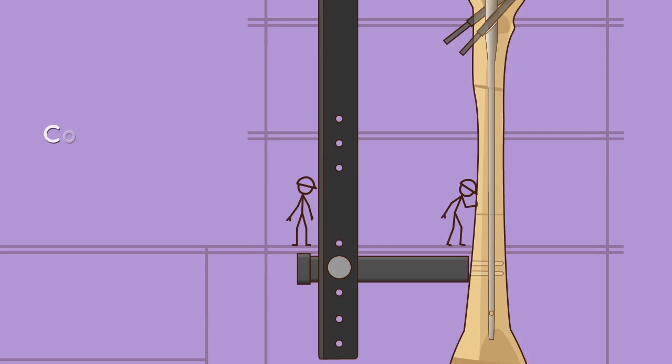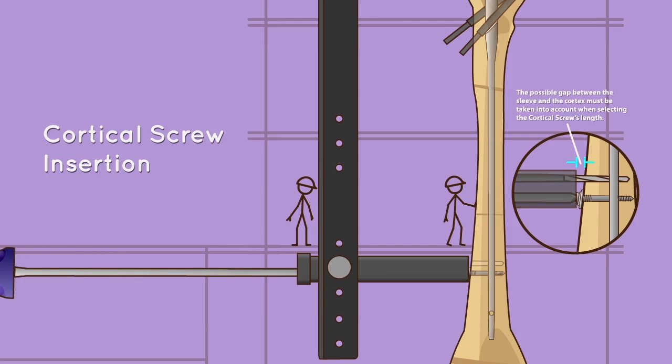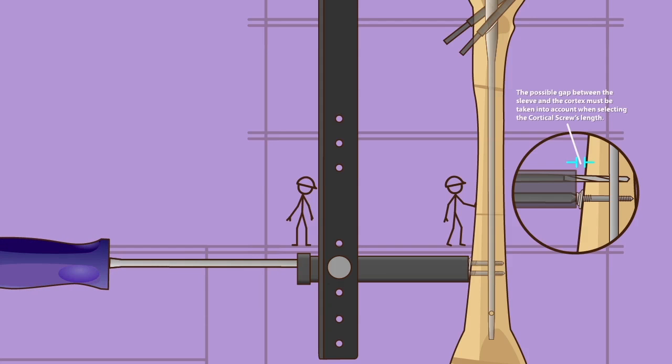Cortical screw insertion: using the multi-purpose screwdriver, insert the cortical screws corresponding to noted length and appropriate diameter. A cortical washer may be used when dealing with fragile bones to improve distribution of stress onto the cortex.